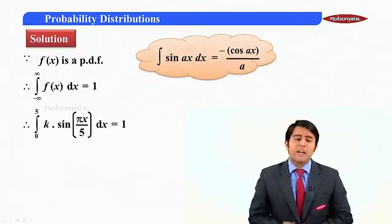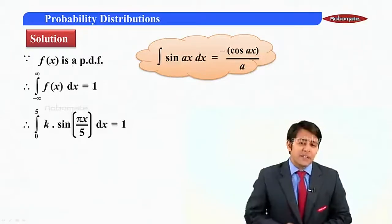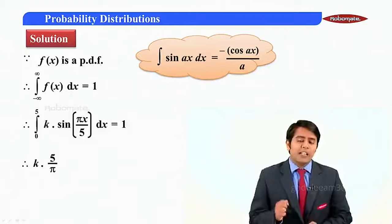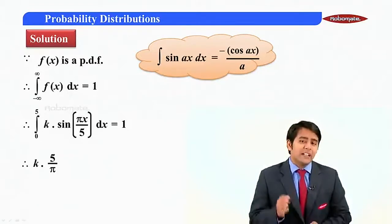And we should understand that integral sin ax dx is minus of cos ax upon a. We always divide by the coefficient of x. So here, the next value will be k into integral that is 1 upon a.